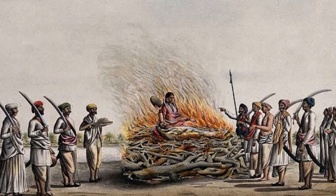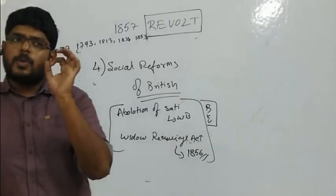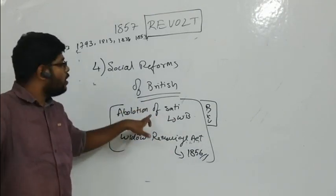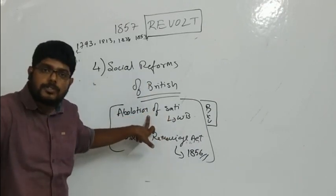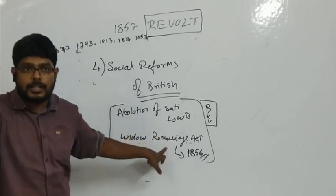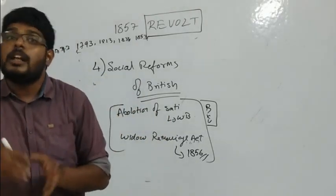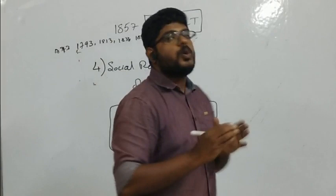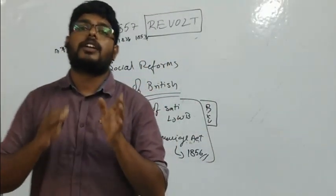Similarly, the Widow Remarriage Act allowed widows to remarry, which went against Indian cultural norms. On the forcing of Raja Ram Mohan Roy, William Bentinck gave the Abolition of Sati. By the work of Ishwar Chandra Vidyasagar and others, the British gave the Widow Remarriage Act. Even though Indians worked for abolition of social abuses, some upper classes remained completely against British interference.